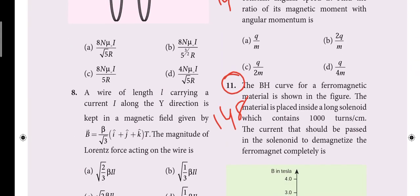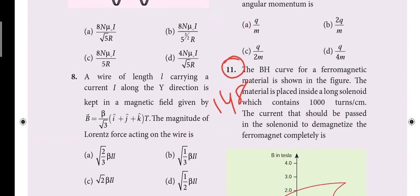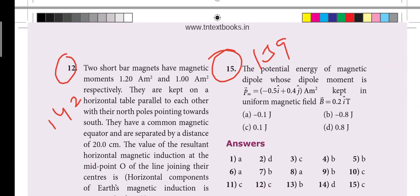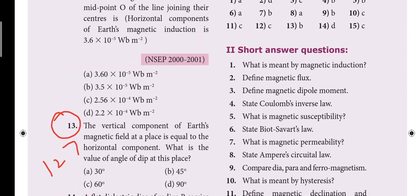Next, 11th one, BHCO for ferromagnetic material. So this is reduced. This one word, page number 148 based. Next, 12th one word, two short bar magnets. So that's 142 page based. It's also reduced one.